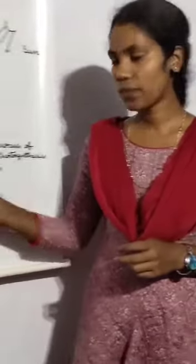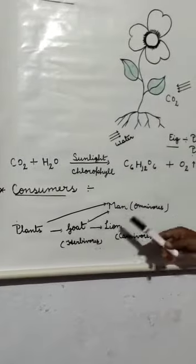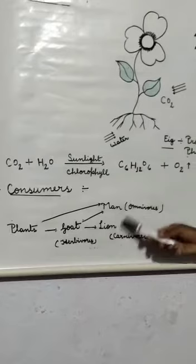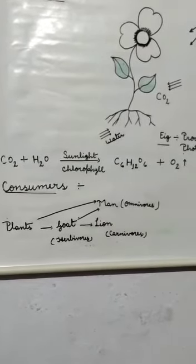Let's understand the difference between herbivores, carnivores and omnivores with the help of a flow chart. Here in the flow chart, plants are being eaten by the goat, goat is being eaten by the lion, and plants and goats are being eaten by the man.